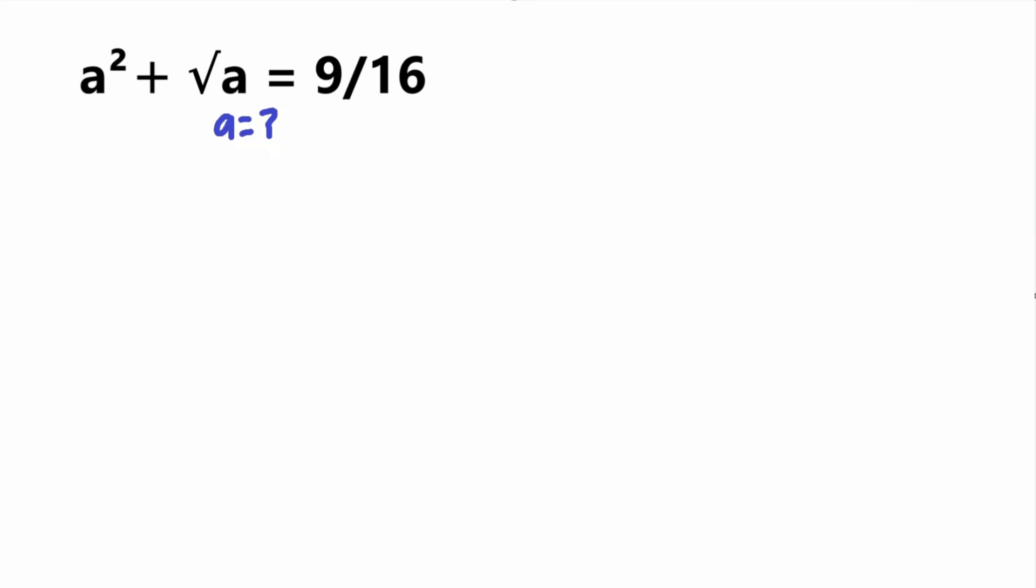When solving this problem, what are we going to do first? First thing I'm going to do is put a squared on the other side. And you'll see why. We have square root of a equals 9 sixteenths minus a squared. Why did I subtract a squared? I did this so we can set up the right side as the third binomial formula.